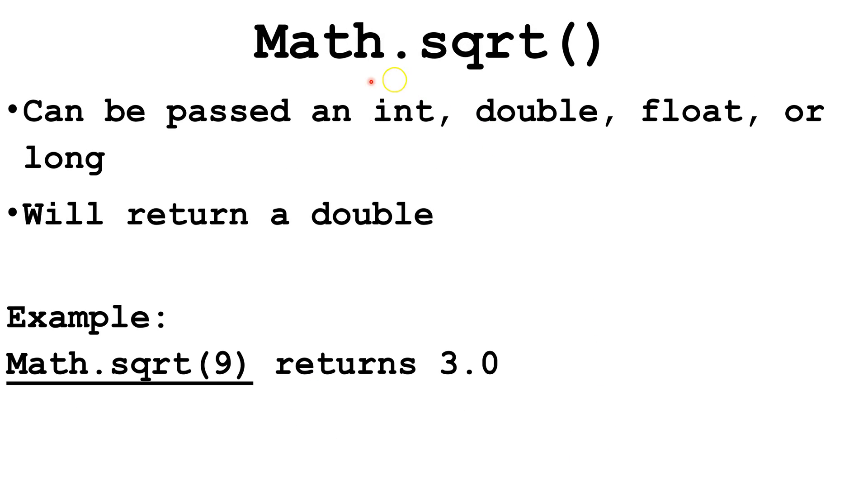Next, we have Math.sqrt. You can pass either an int, a double, a float, or a long. Math.sqrt will always return a double.